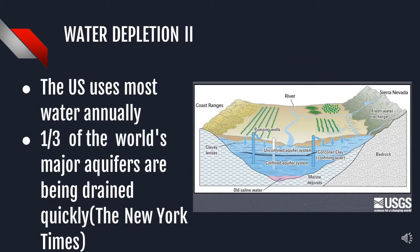The US uses 1.2 trillion gallons of water annually, according to the USGS. This is 725 million more gallons than Brazil, the country with the second most water consumption. This shows why the US should conserve water better. Around one third of our most important aquifers are being exploited and dried up at an exponential rate.